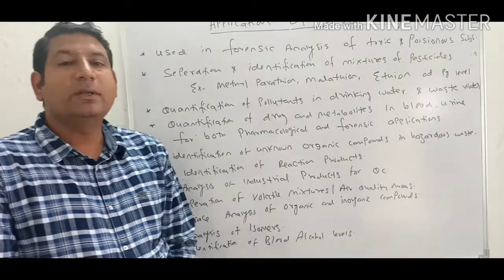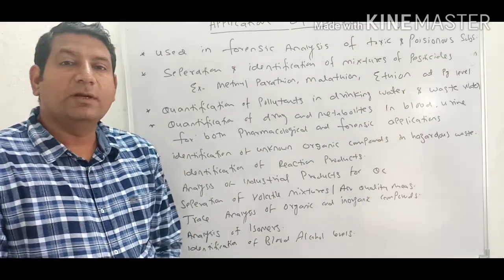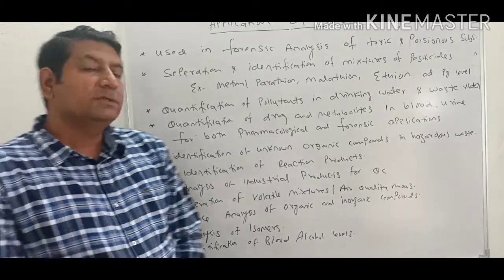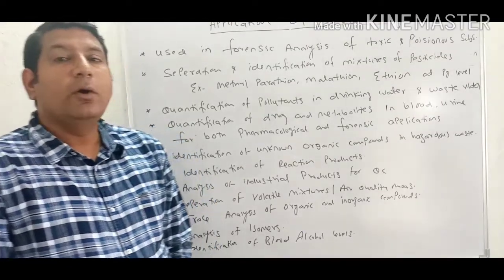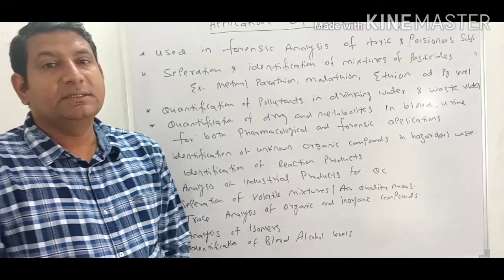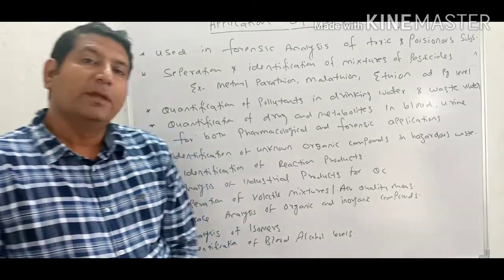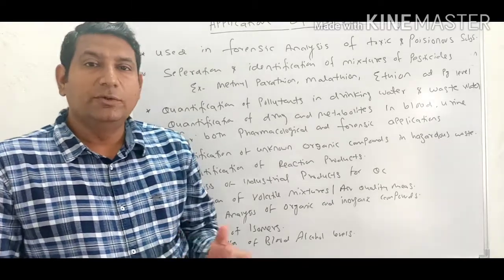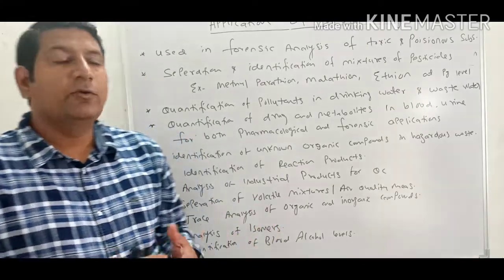In the last lecture we discussed the instrumentation of gas chromatography — the various components of the instrument. The major components are the cylinder, column, detector, and recorder. In the column, we studied that there are three shapes: straight, U-shaped, and coiled. The choice of shape depends upon the utility, the length of the column, and the type of analysis to be performed.